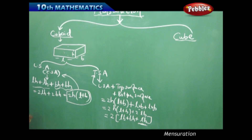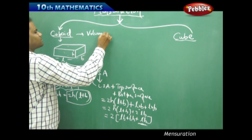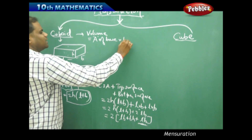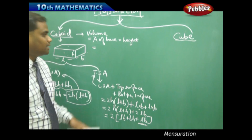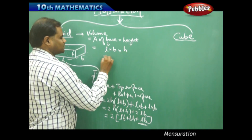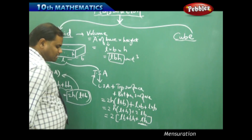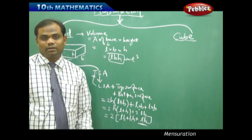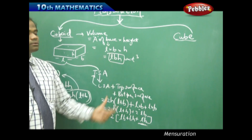Similarly, the volume of a cuboid is area of base times height. The area of the base is L×B and the height is H. Therefore, the volume of a cuboid is L×B×H cubic units. The surface areas are in square units — LSA is 2H(L+B) and TSA is 2(LB+BH+LH).